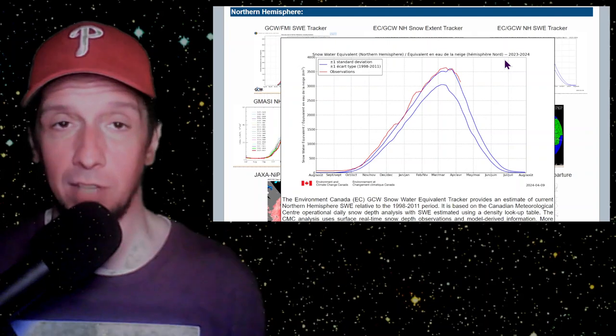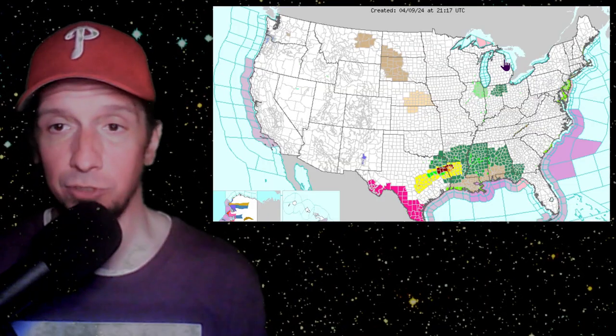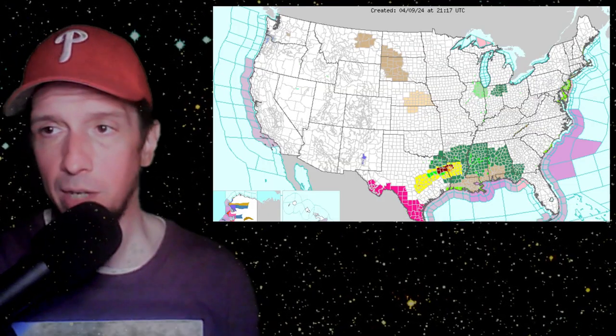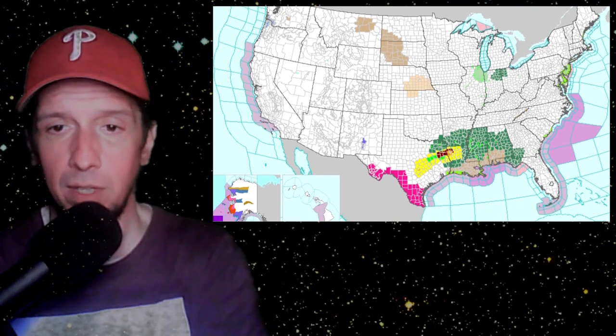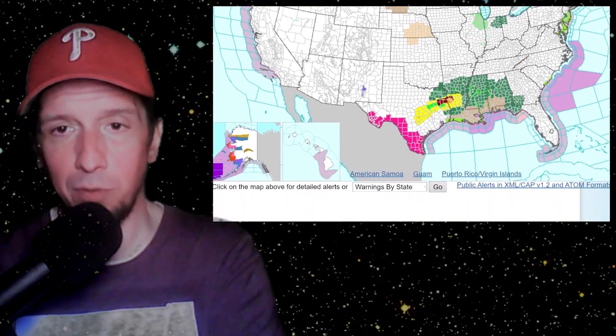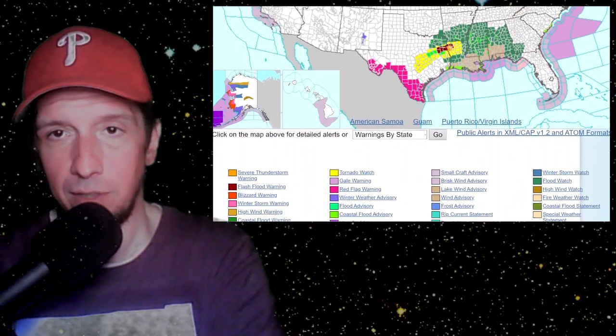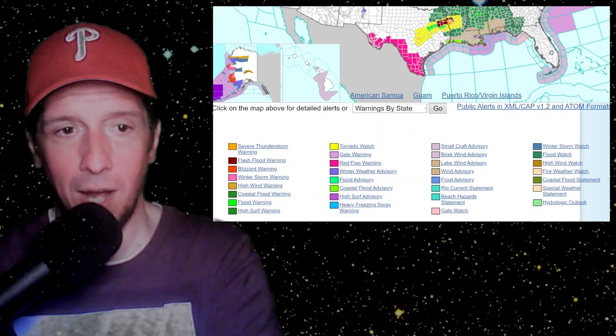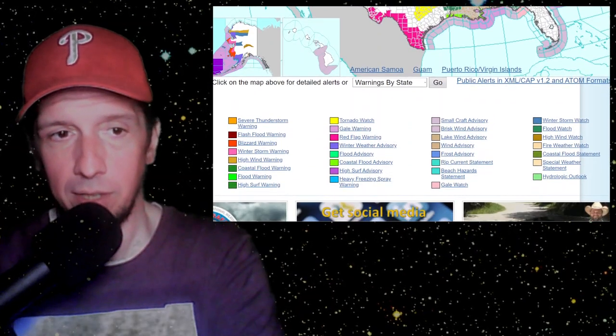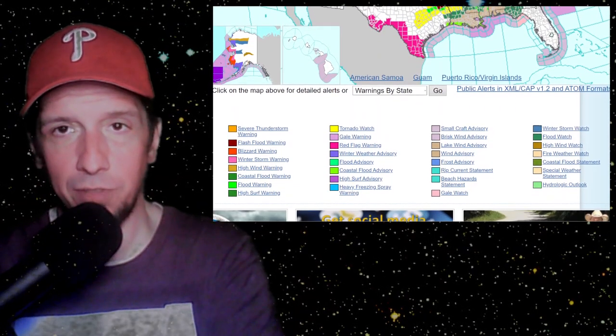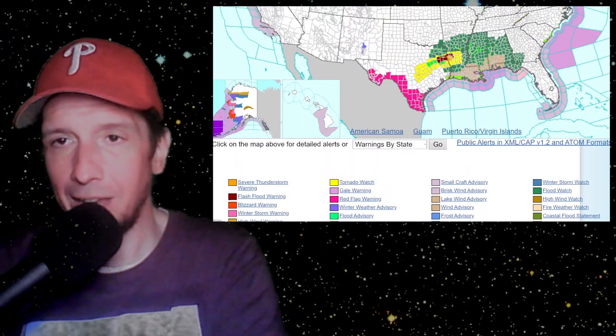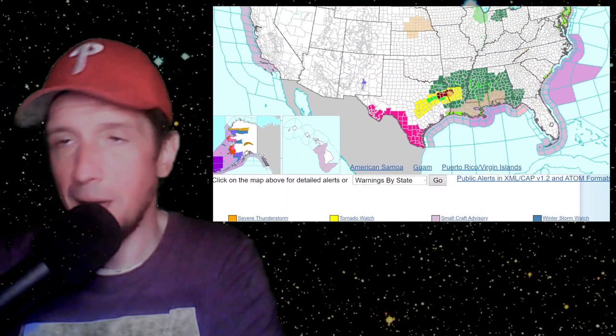Here is our Weather.gov map. We've got some tornado watches there, it looks like, over parts of Texas and Louisiana. Flash flood warnings, tornado watches, and high wind, severe thunderstorm warnings, et cetera. If your location's lit, click your location on the map. Weather.gov, the homepage of the National Weather Service.